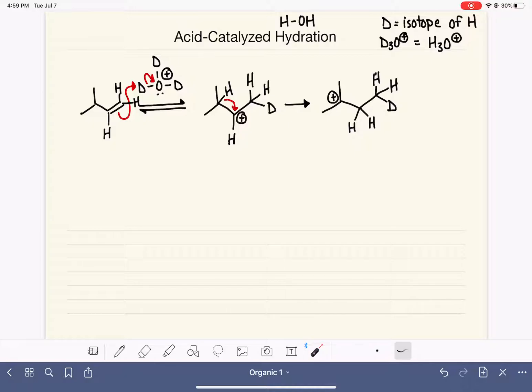So very much like our hydrohalogenation reaction, we are now going to take the leftovers, the part that was leftover after the first step, which is water, or D2O in this case, water with deuterium. And the lone pair of electrons on that D2O is going to attack the positive charge on our carbocation.